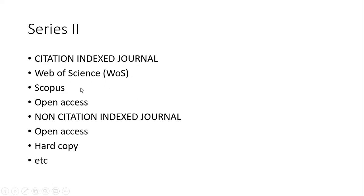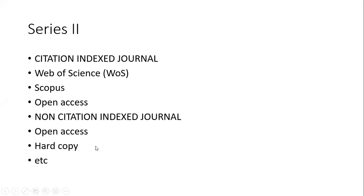CIJ is actually based on journals listed in Web of Science, Scopus, or Open Access. Open Access is actually free, whereas Web of Science mostly you have to pay for it, as well as Scopus — previously it was free but nowadays nothing is free. The minimum amount for legit journals might be about 400 US dollars and can go up to nearly 1,000 US dollars. The non-CIJ consists of open access and also hard copy journals.